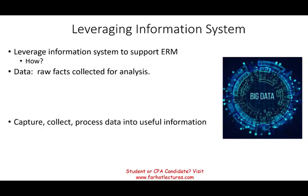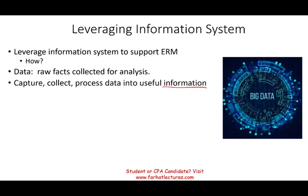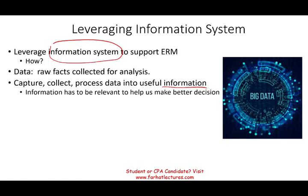What we do is capture, collect, and process the data into useful information, and our information system helps us do that. That data could be internal data or external data — we can buy it or download it from a third party. Once we process the data into better information, it's going to help us make better decisions to run our enterprise risk management system.